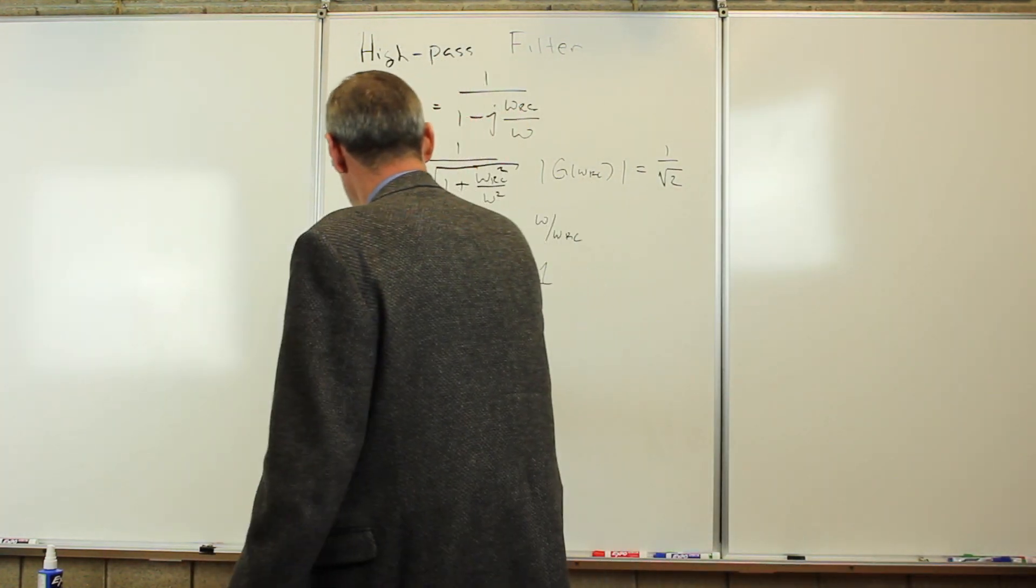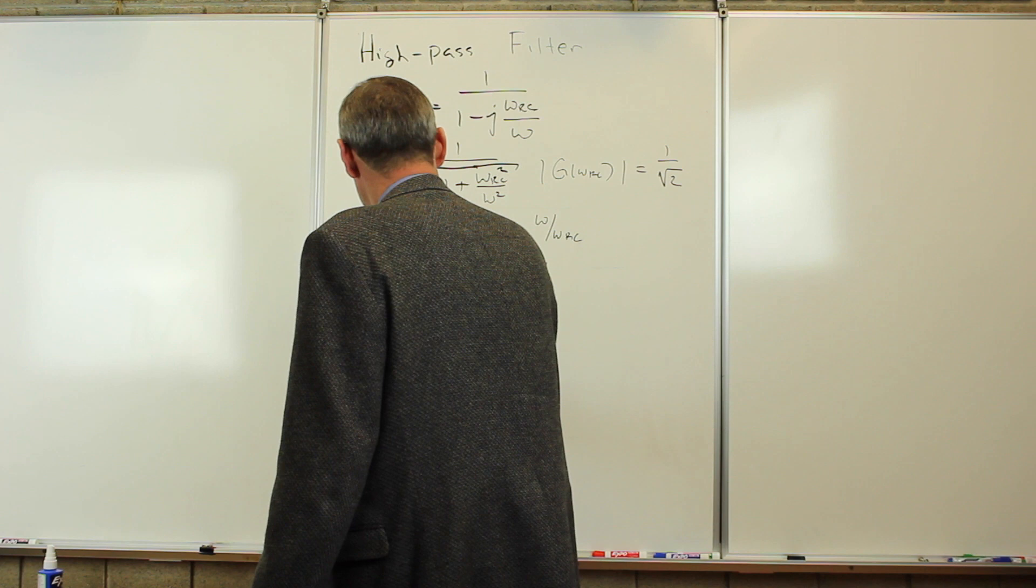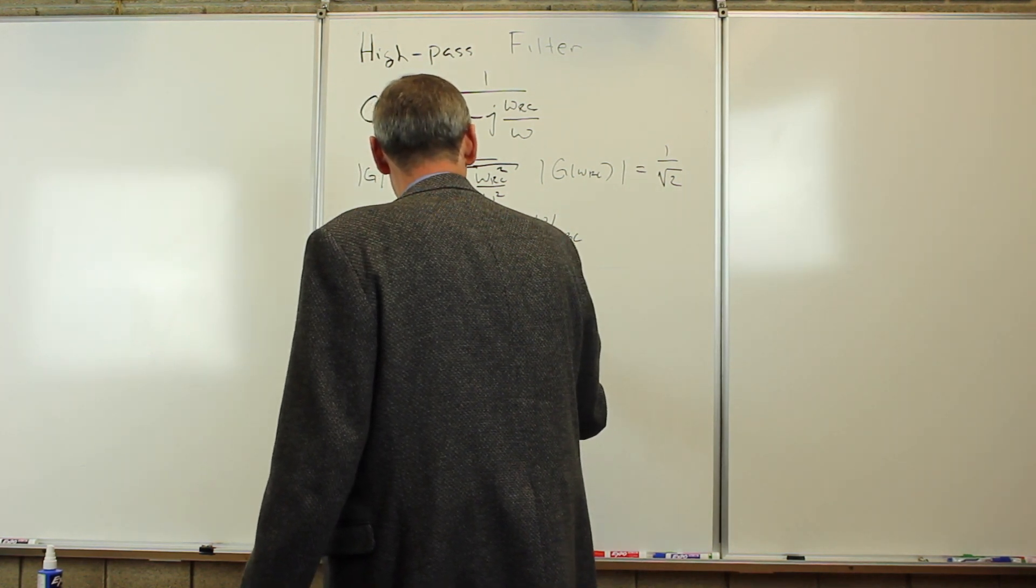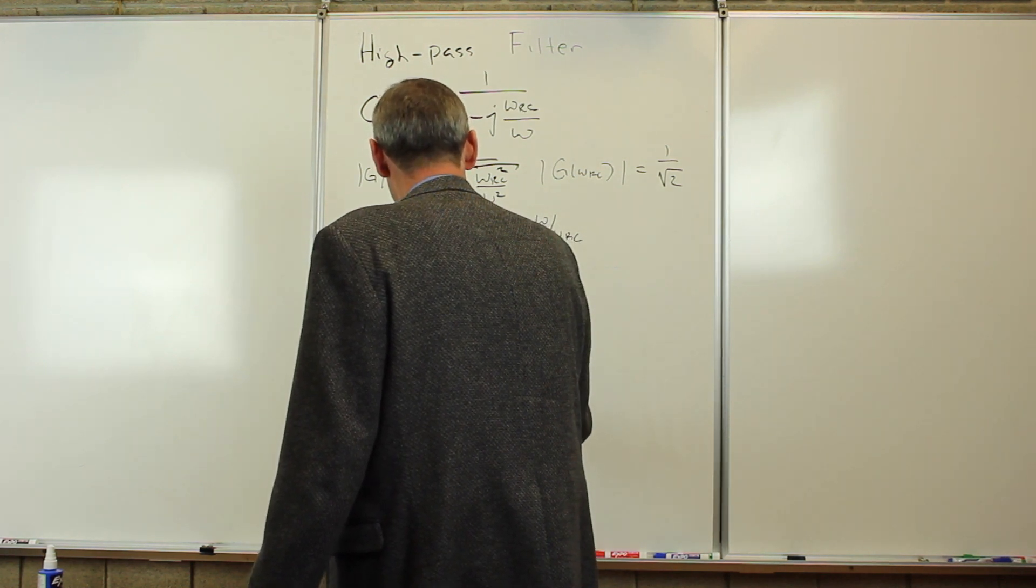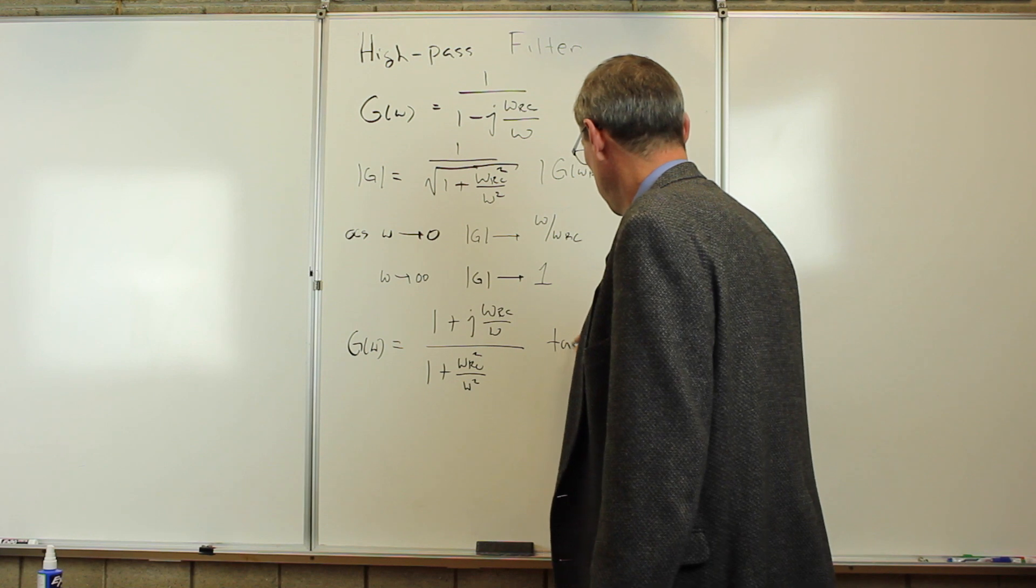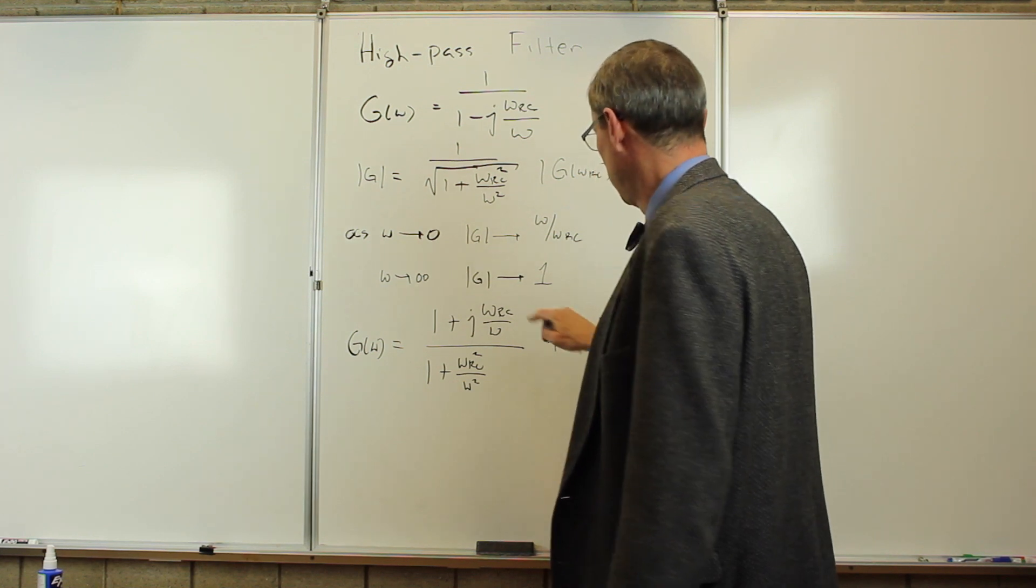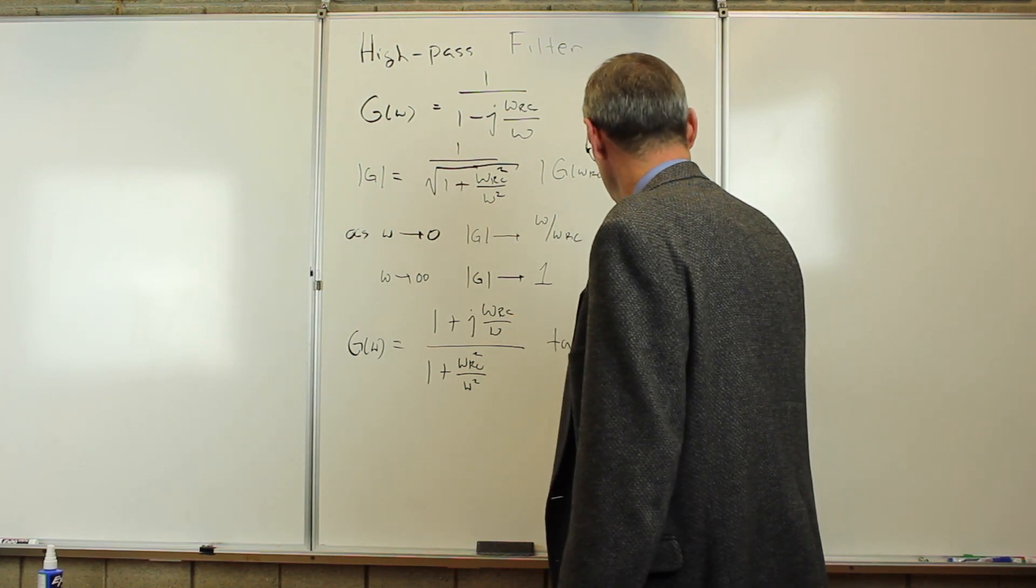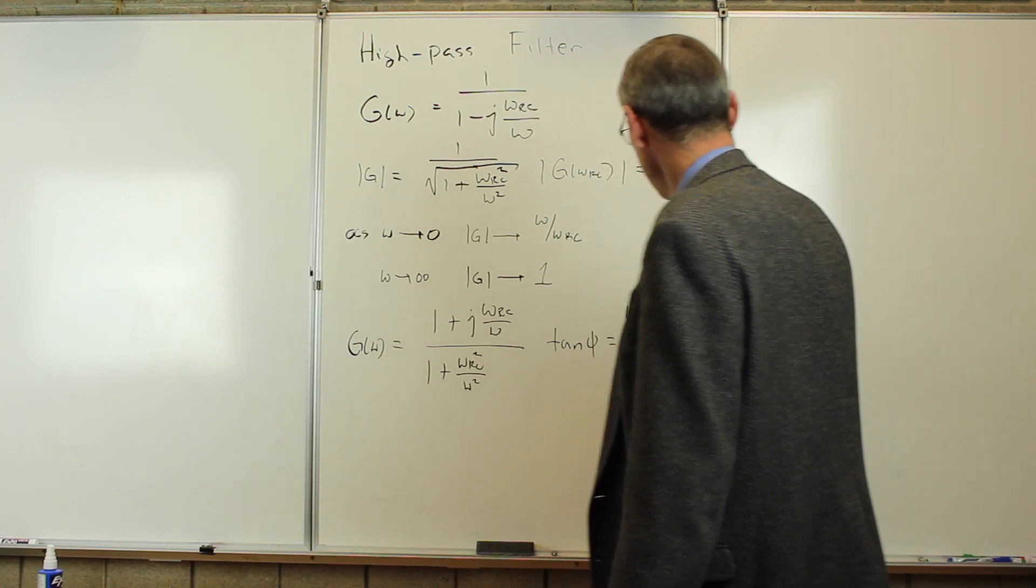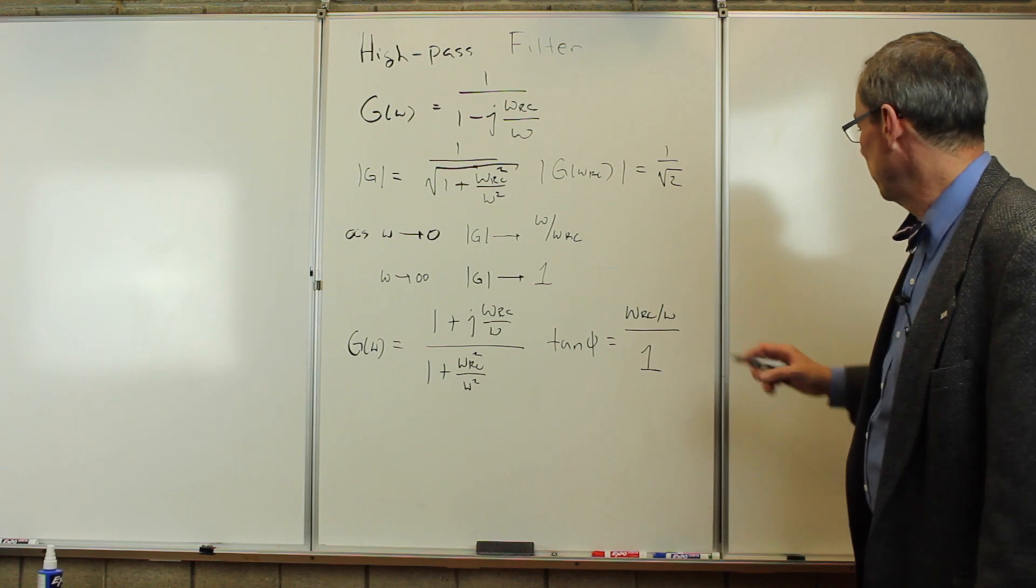How about the phase? We have to rationalize this. So the gain is going to be 1 plus j omega RC over omega, over 1 plus omega squared. So the tangent of the phase angle is going to be the imaginary part over the real part, omega RC over omega over 1. Both of these are positive. We're in the first quadrant.